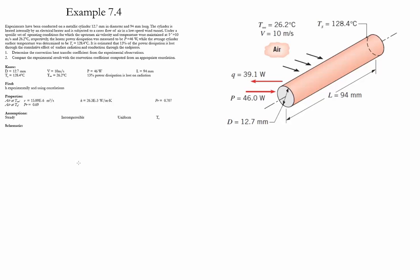The next step in the analysis is to evaluate the value of the convection coefficient using an appropriate correlation. To find the appropriate correlation, we start by evaluating the Reynolds number.